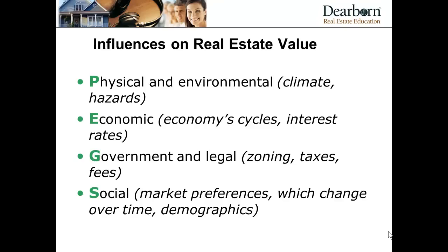Now, the influences on real estate value. Remember, to have value it needs DUST, and the things that can influence that value can be remembered with PEGS. P is for physical or environmental influences — things like climate and hazards present on or adjacent to the property. E is for economic influences — the normal cycles of the economy and interest rates as discussed earlier.